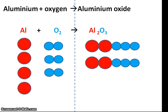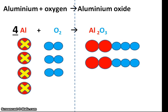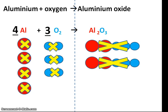Now I need to count how many lots of each element I have. I have four aluminium atoms, so before the aluminium symbol here I need to write a big four. I have three lots of oxygen, so before the oxygen symbol here I need to write a big three. And finally, I have two lots of aluminium oxide, so before the aluminium oxide symbol here I need to write a two.